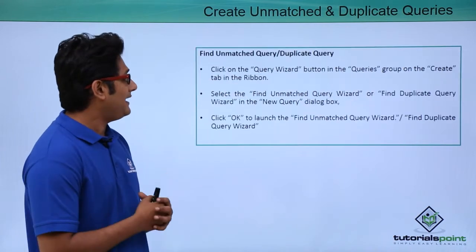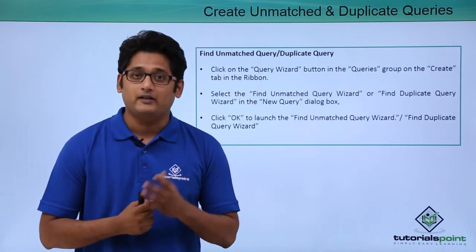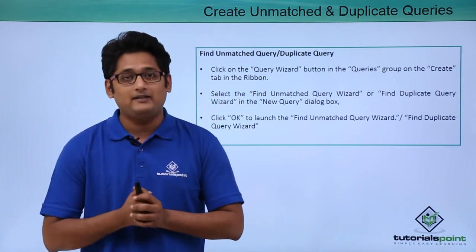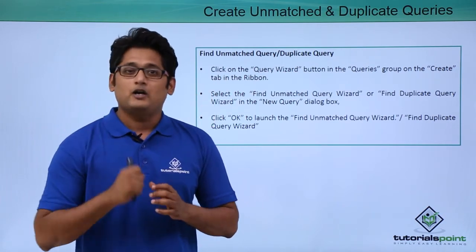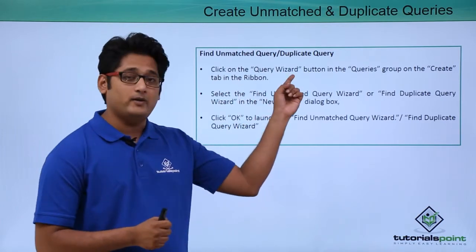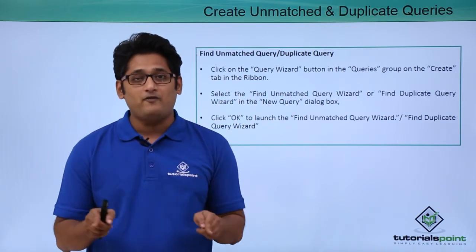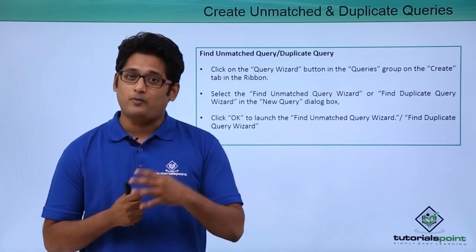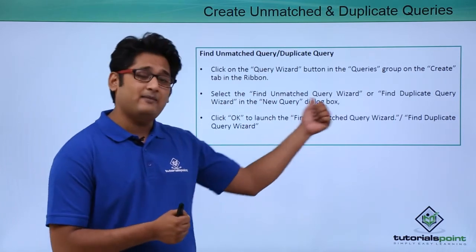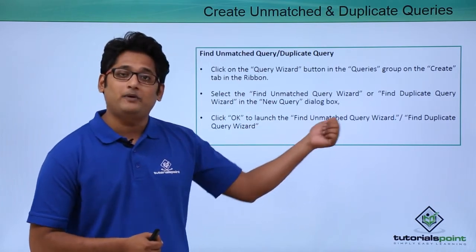To perform this activity, you go under the Create tab and under the Create tab you will go to the Queries group. Under the Queries group you will find Query Wizard. The moment you click on Query Wizard, a new pop-up window will come in which you have four options, two of which will be Find Unmatched Queries and Find Duplicate Queries.